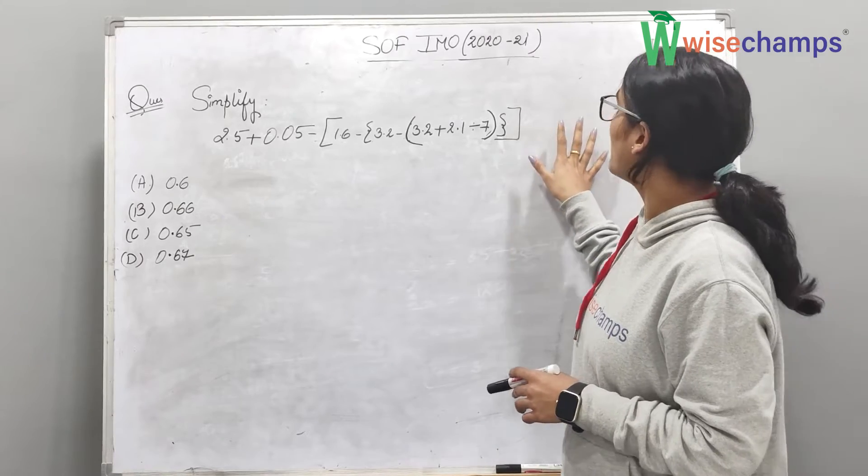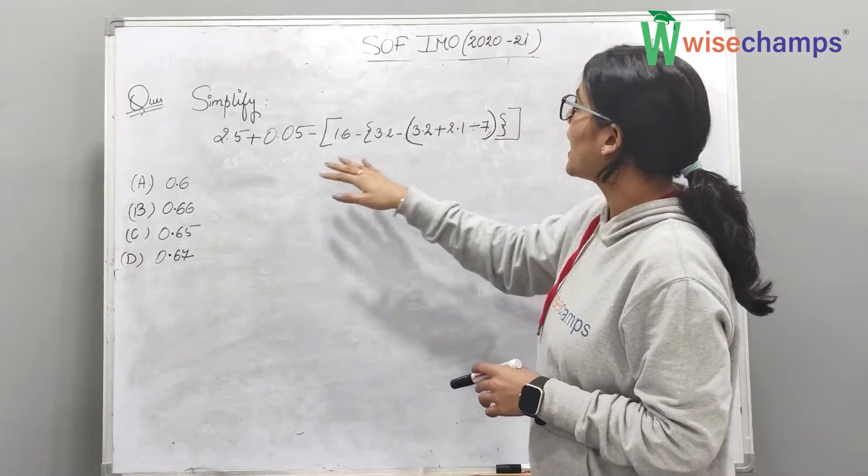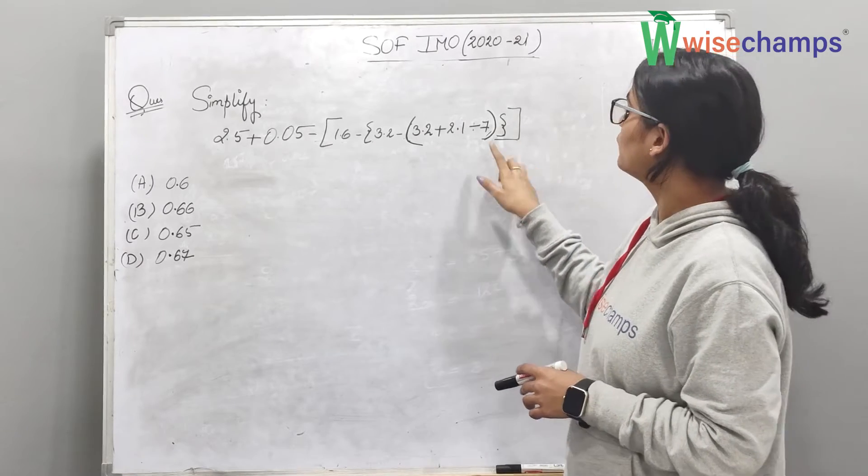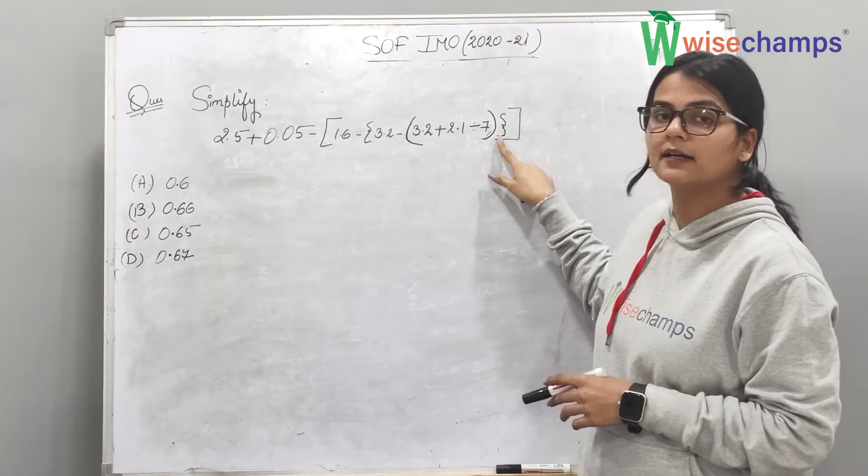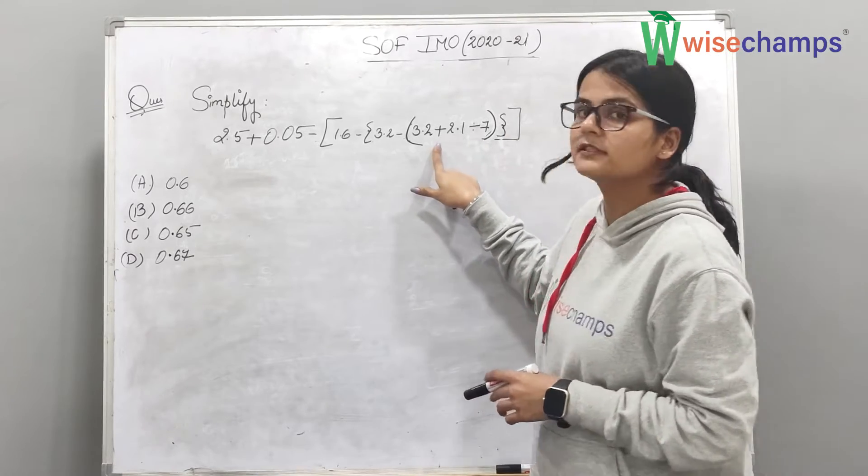So firstly, we have to solve brackets. And we have three types of brackets here: small bracket, curly bracket and square bracket. Firstly we will solve small bracket.